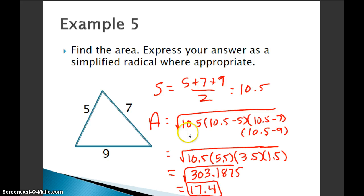So I've got 10.5 as my semi-perimeter. So to find the area of the triangle, it's the semi-perimeter, 10.5, times the semi-perimeter minus each of the sides. 10.5 minus 5, 10.5 minus 7, 10.5 minus 9. And then from there, I just plug those pieces in. Multiply all the numbers together, and I've got 303.1875. Don't bother simplifying that radical. Take the square root, round to the nearest tenth. 17.4 is our answer for that.